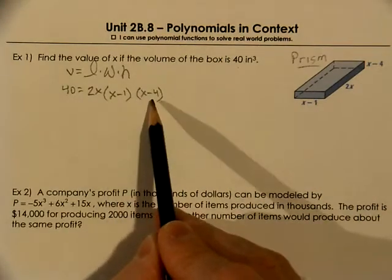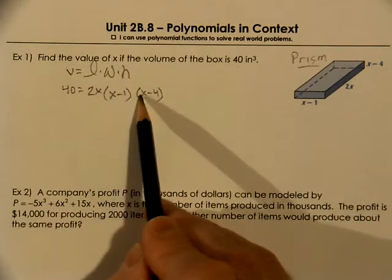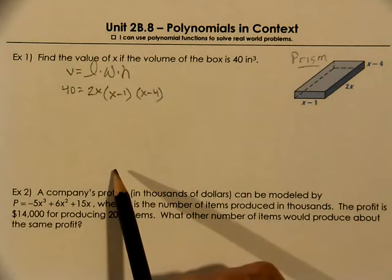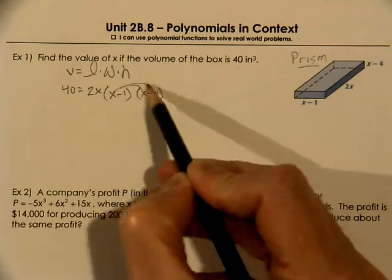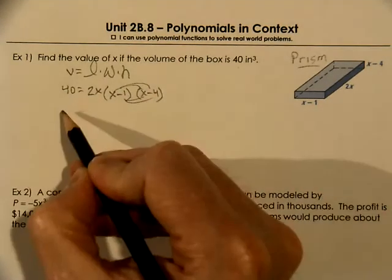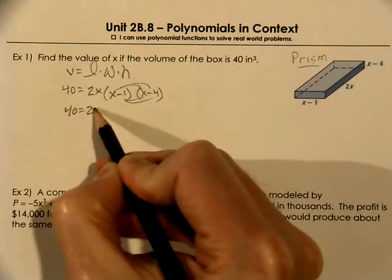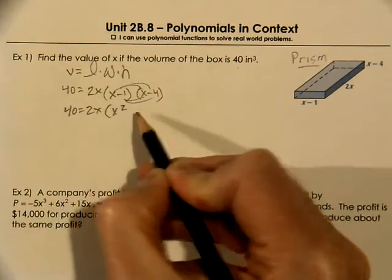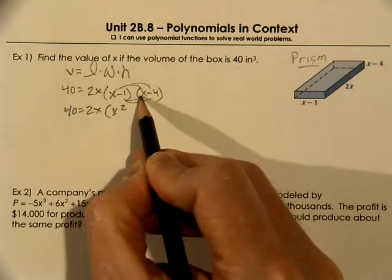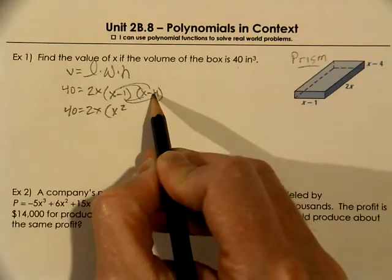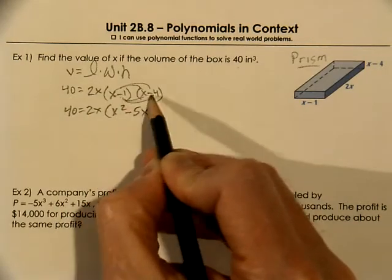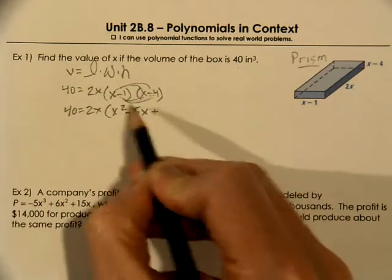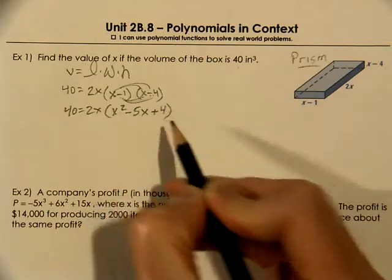So to solve for x, we can't do it in this factor format. So what could we do? We have to multiply our two binomials together. So we'll get x squared, because x times x, and then you get negative 4x and negative 1x, which gives us a total of negative 5x, and then positive 4.